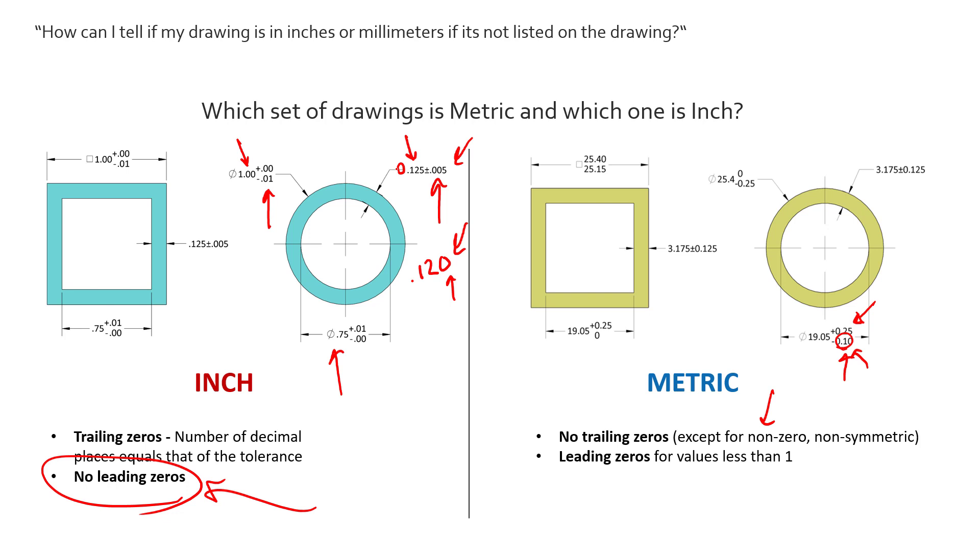So we should be careful to not assume the rules were followed. But if the rules were followed, we can know based off the drawing and the leading and trailing zeros whether it is either inch or metric.